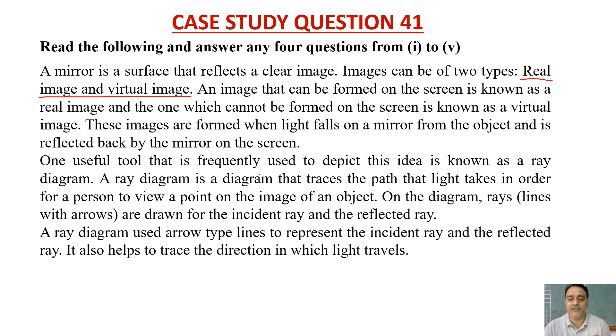One useful tool that is frequently used to depict this idea is known as ray diagram. A ray diagram is a diagram that traces the path that light takes in order for a person to view a point on the image of an object. On the diagram rays, lines with arrows are drawn for incident rays and the reflected rays. A ray diagram used arrow type lines to represent the incident ray and the reflected ray. It also helps to trace the direction in which the light travels.